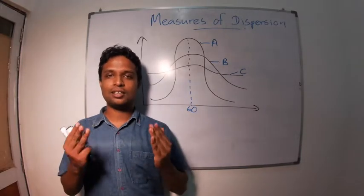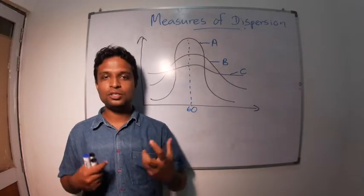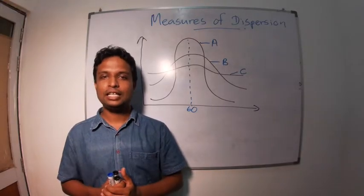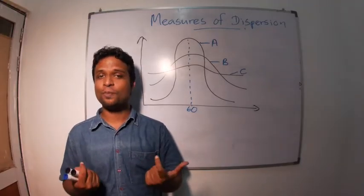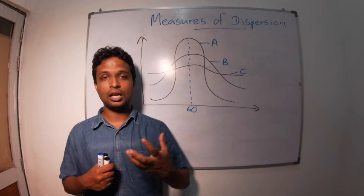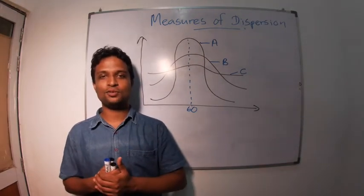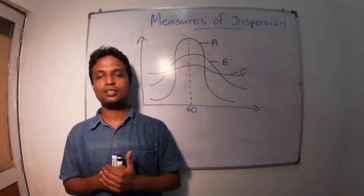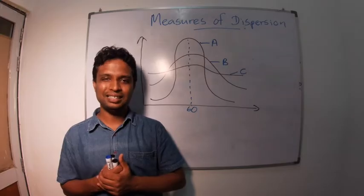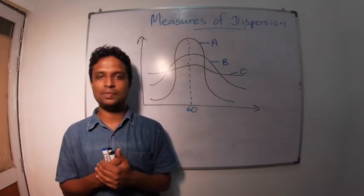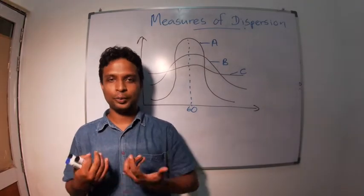Now, the three class teachers are discussing the performance in mathematics in their classes. The class A teacher says my average is 60, so my students are good. Class B teacher says my average is also 60, so my class is also the same. Class C teacher says my class average is 60. I think even though the average is the same as yours, my class is better than your classes. Now, we have a problem.